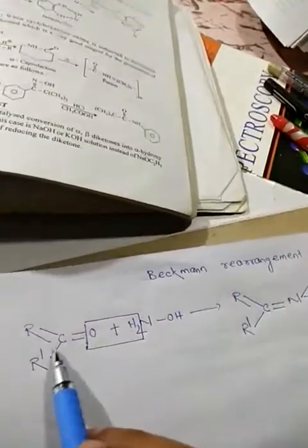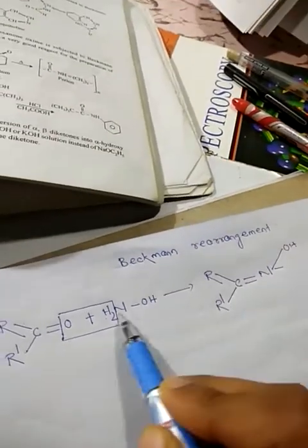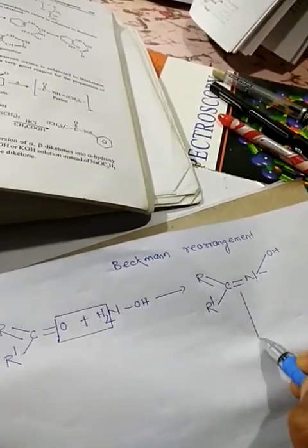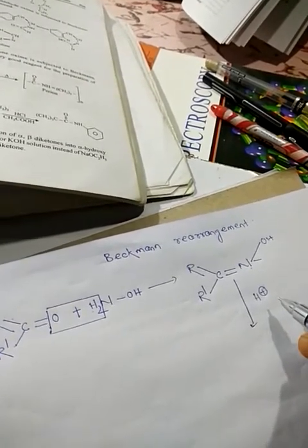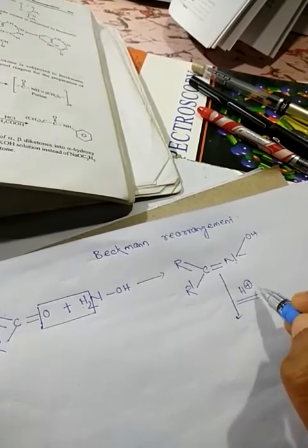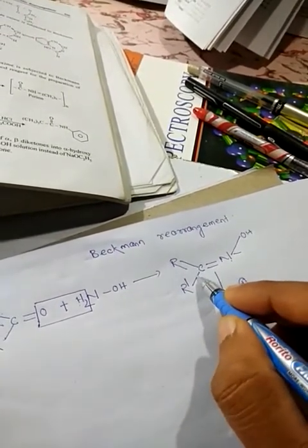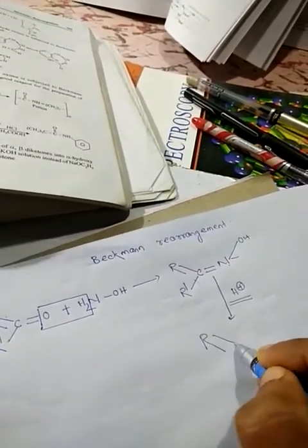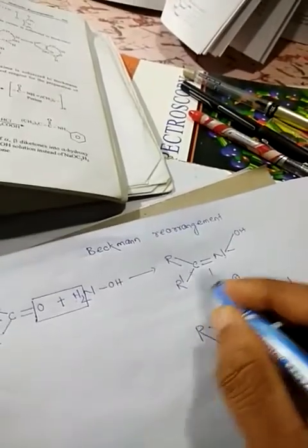Beckman rearrangement: whenever an asymmetrical ketone reacts with hydroxyl amine, it will form the oxime. When the oxime is treated with acid such as sulfuric acid or formic acid, it undergoes a 1,2-alkyl shift and will form an N-substituted amide.